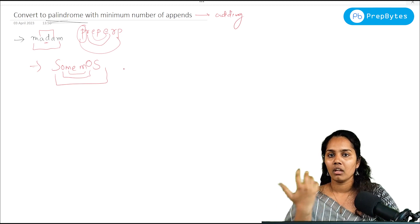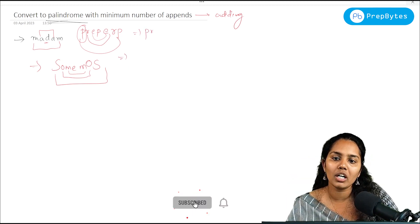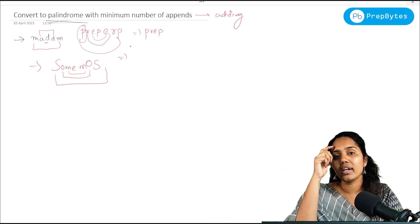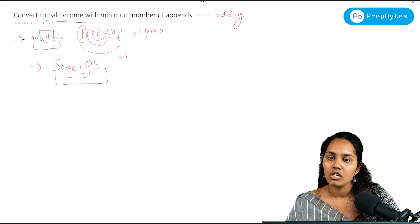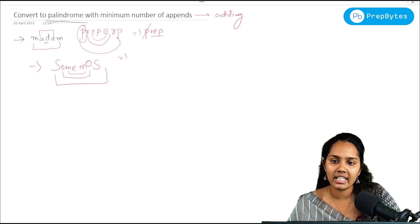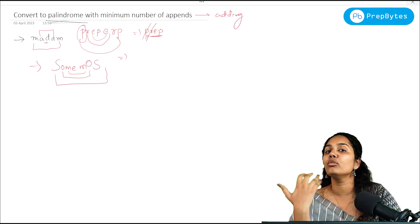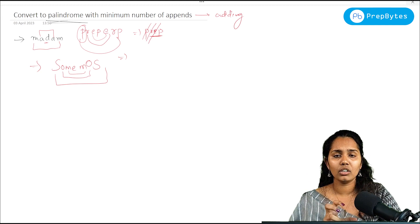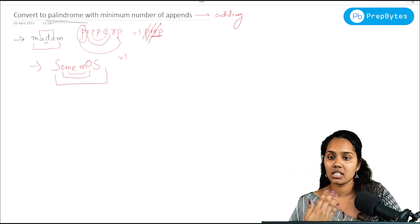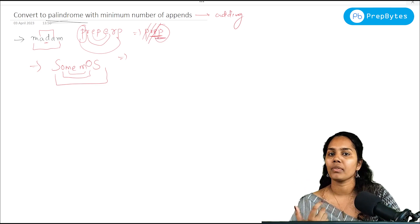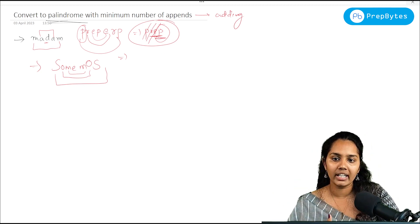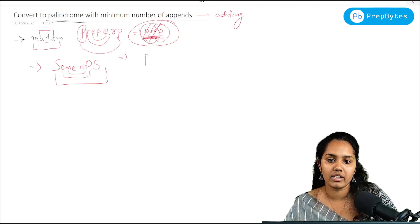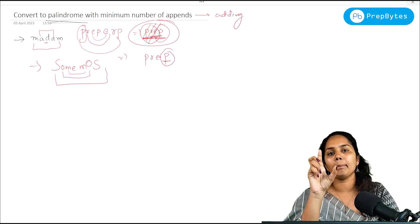But the optimal approach is different. Take the same example, 'prep'. First, I'll try to find a palindrome already existing within the string by removing characters from the front. Remove 'p' — we're left with 'rep', which is not a palindrome. Remove 'r' — we get 'ep', not a palindrome. Remove 'e' — we're left with just 'p', which is a palindrome.